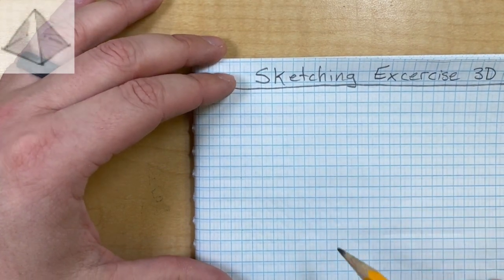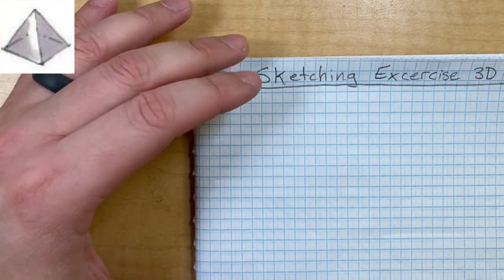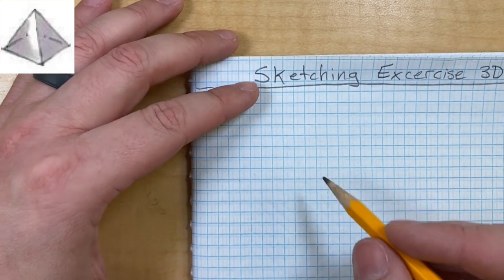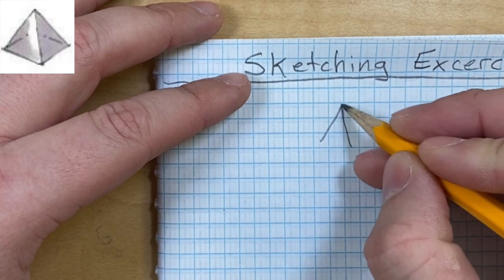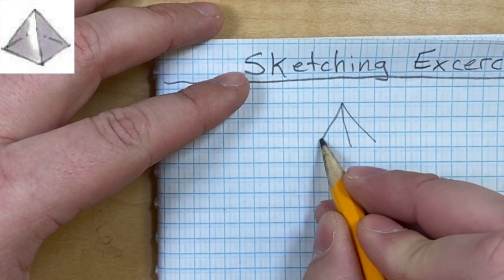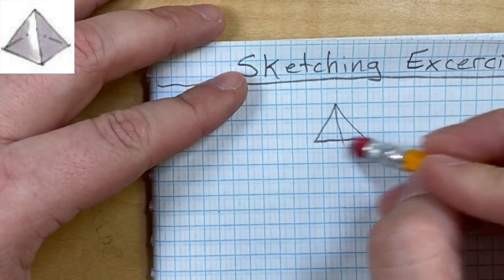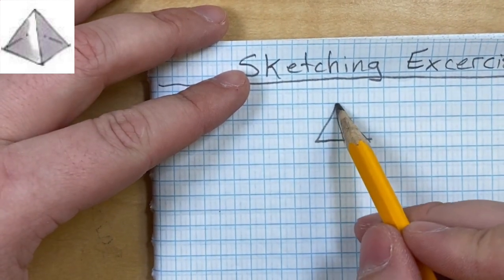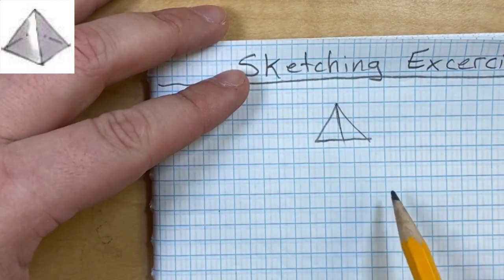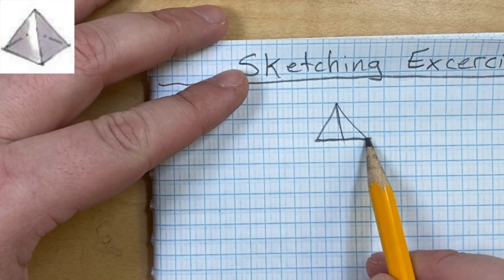So with the pyramid, this is one mistake I see students do. They draw their pyramid like this. And that's their pyramid. And I think they do that because they know the pyramid has sides facing different directions and they draw it flat because it sits flat on the earth.